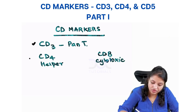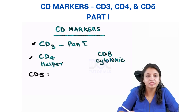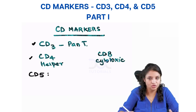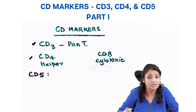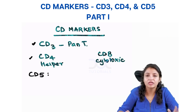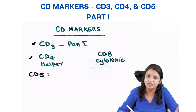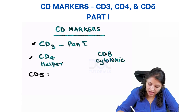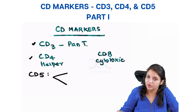We have to remember CD3, CD4. What about CD5? CD5 is usually a T cell marker — it's present on T cells — but you have to remember that some B cells can also express CD5, and there are 2 lymphomas which are CD5 positive.